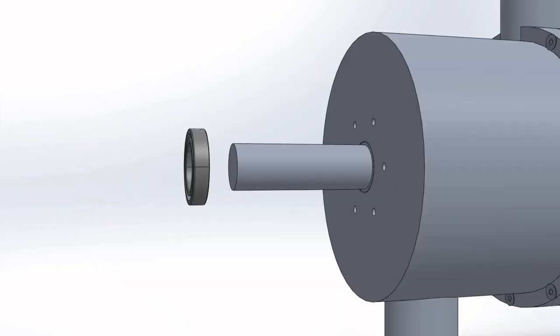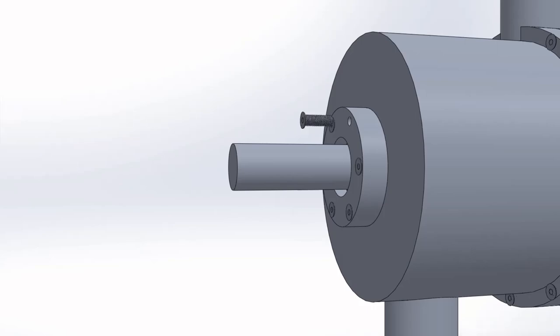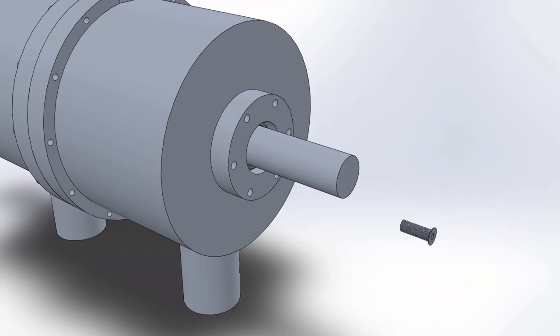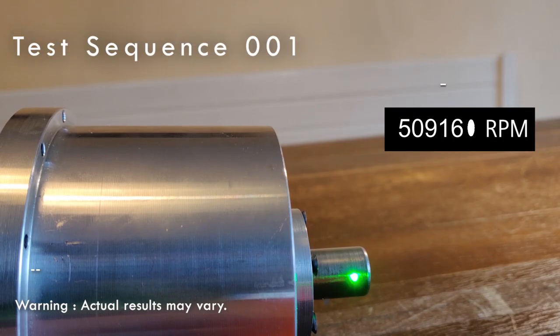The interference fit bearing is fitted to the shaft first using a hydraulic press by heating the bearing to 110 degrees Celsius. The housing is placed over this and fixed to the main turbine with 6 M3 bolts. The clearance bearing is fitted on the other side with the housing fixed to the main turbine in the same way.